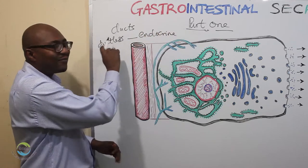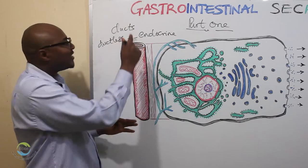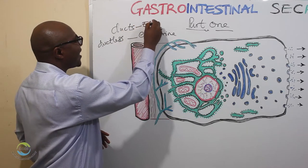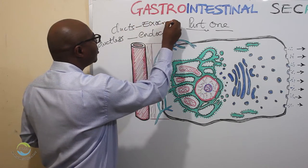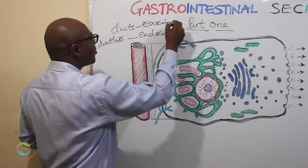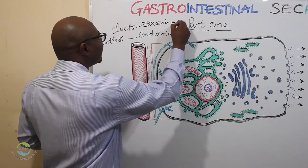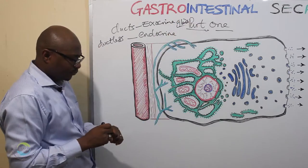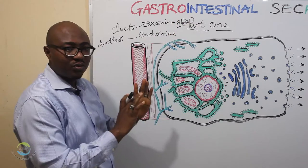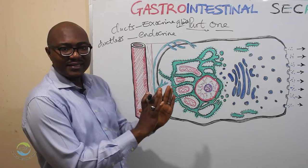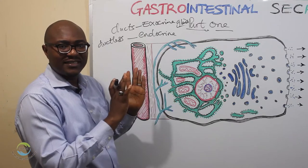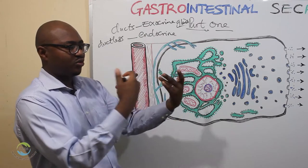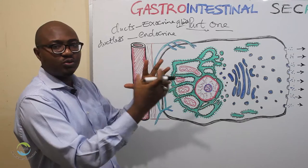These glands that have ducts are called exocrine glands. Those accessory glands open into the GIT through ducts.